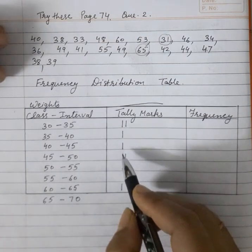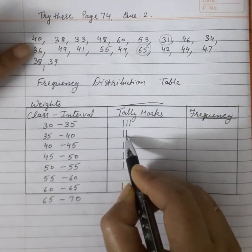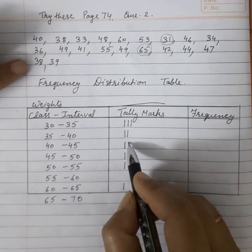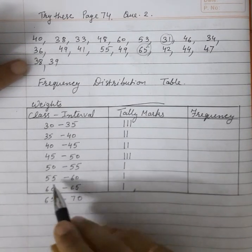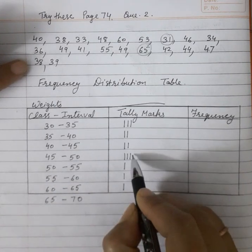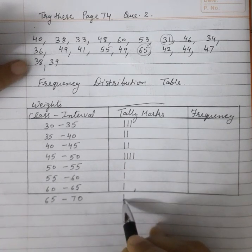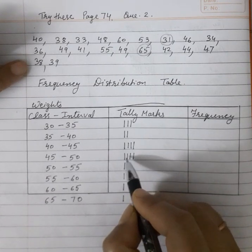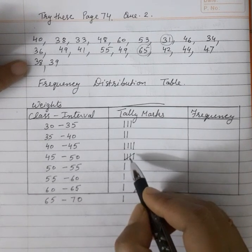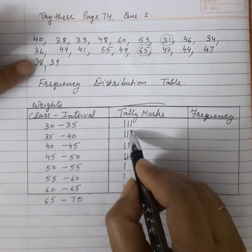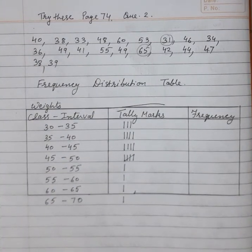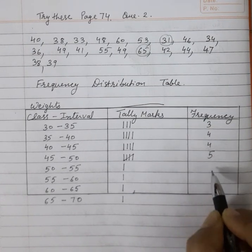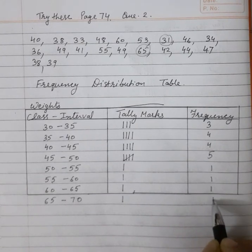Then 46 goes in 45 to 50. Next is 34, then 36. Then 49 comes between 45 and 50. Then 41, then 55 which comes in the higher interval 55 to 60. Then 49 again, then 65. Next is 42, then 44 — also in 40 to 45. Then 47 makes the group the fifth tally in 45 to 50. Finally 38 and 39 — both come in 35 to 40.